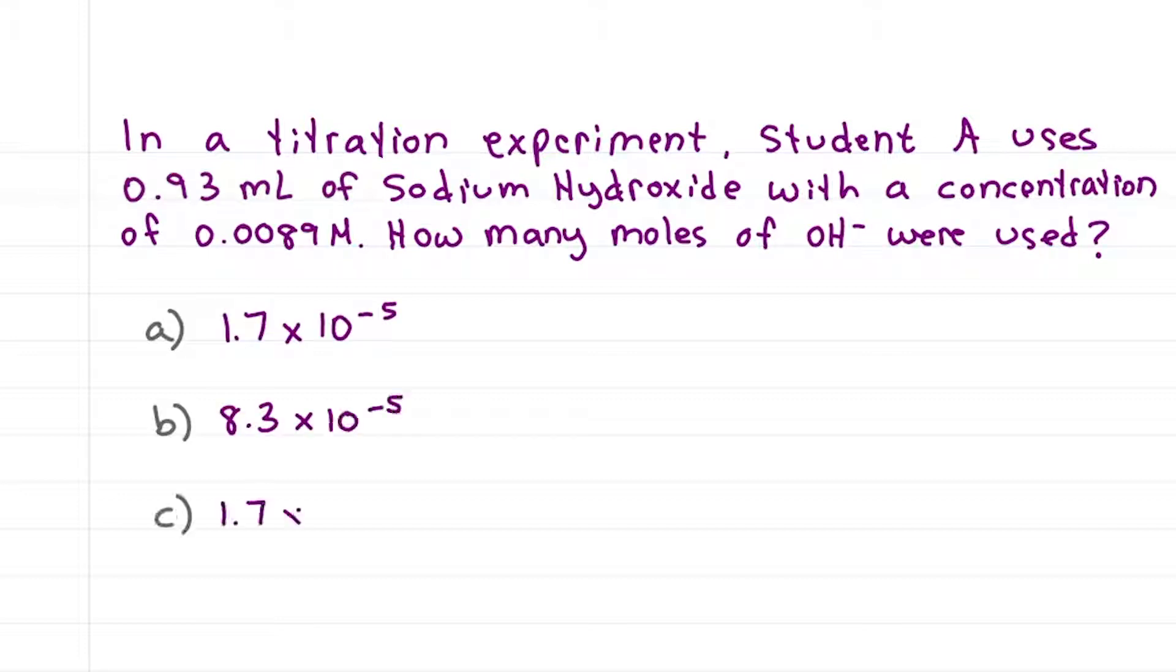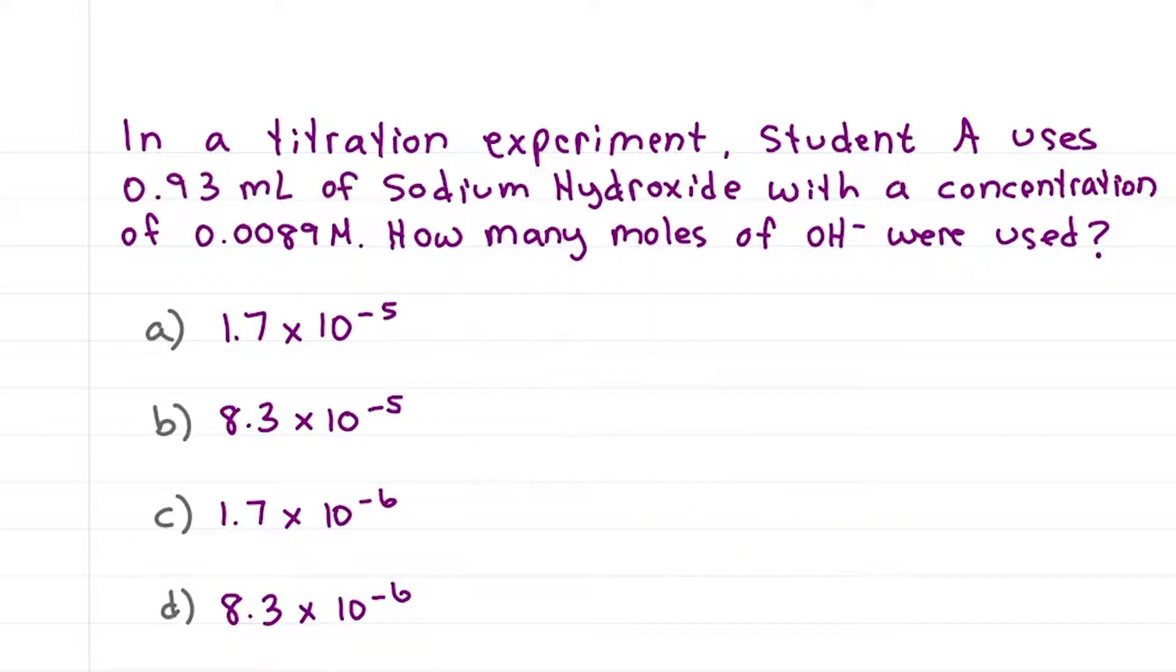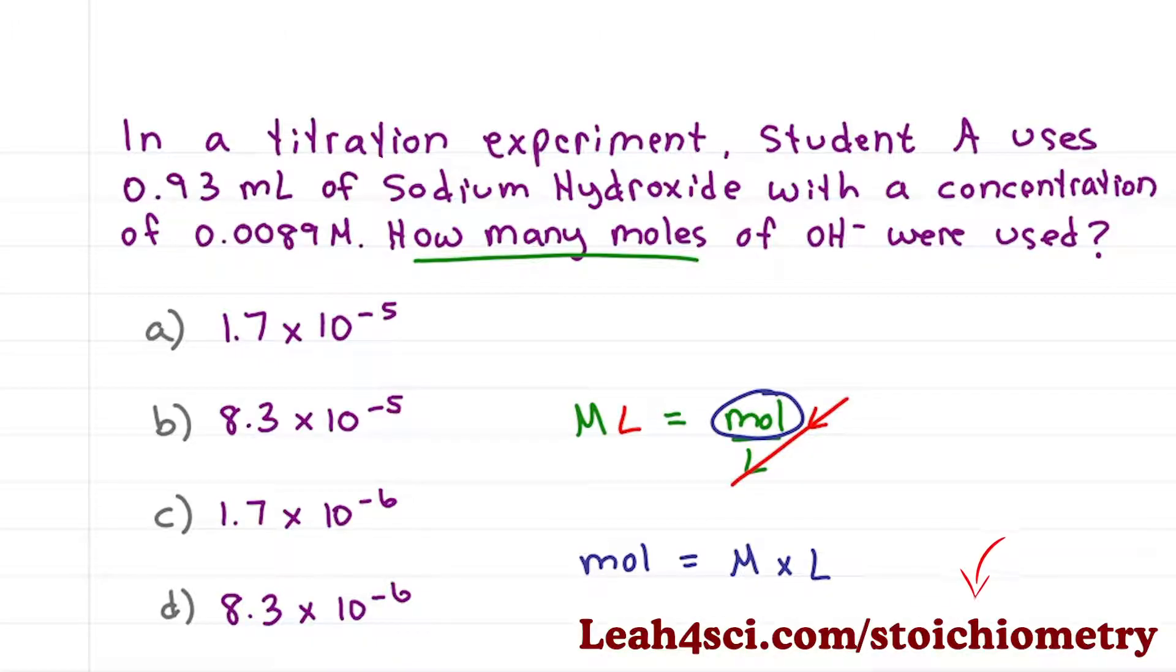We have what looks like a simple enough molarity problem, if only we had a calculator. But we don't, so let's break it down. Since we're only asked for moles, we'll ignore titration and use molarity equals moles per liter to derive moles equals molarity times liter as I teach in the stoichiometry videos below.